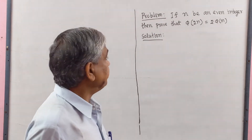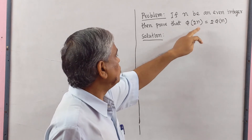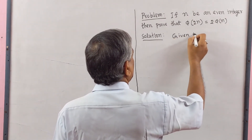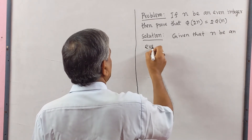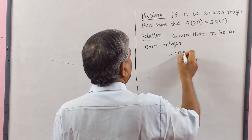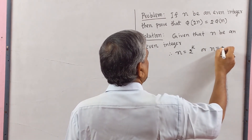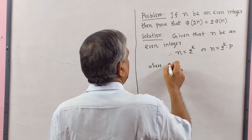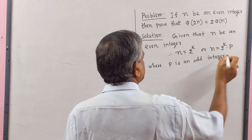Now we solve the next problem. If n be an even integer, then prove that phi(2n) equal to 2·phi(n). Given that n is an even integer. Therefore n equal to 2^k or n equal to 2^k · p, where p is an odd integer. These are the two cases, case 1 and case 2.